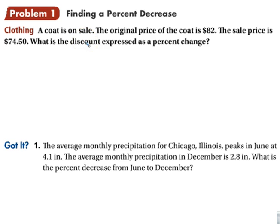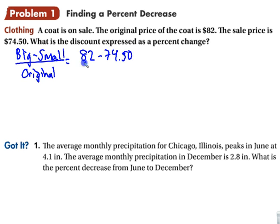So a sale on a coat. The original price is $82. Here's the sale price. What is the discount expressed as a change? So we're going to do the big minus the small over the original. The big number is $82 minus $74.50 over the original, which is $82.